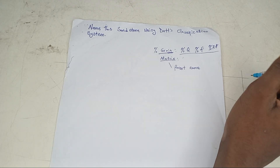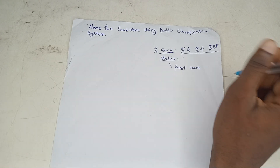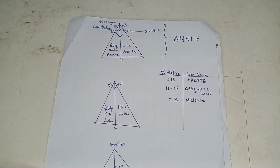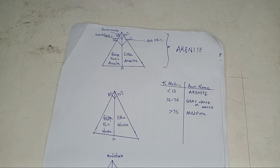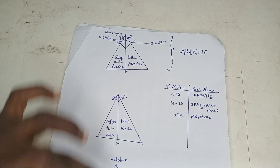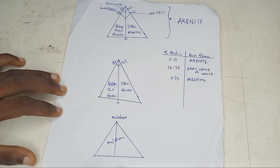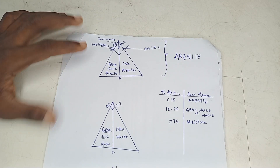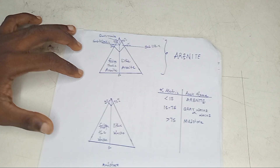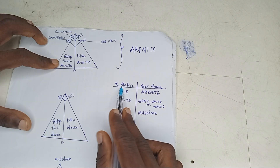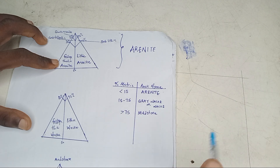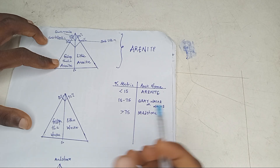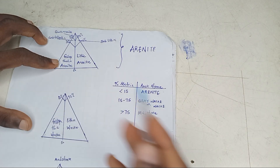So we're going to do a bit of classification. Any question you are given, you look at it. I have three triangles here. Let me start with the first, then we'll move to the third one. Starting with the parent's name — on this side we have the percentage matrix and we have the rock name. If you are given a question and they mention the matrix percentage, that's what you need to first take note of.